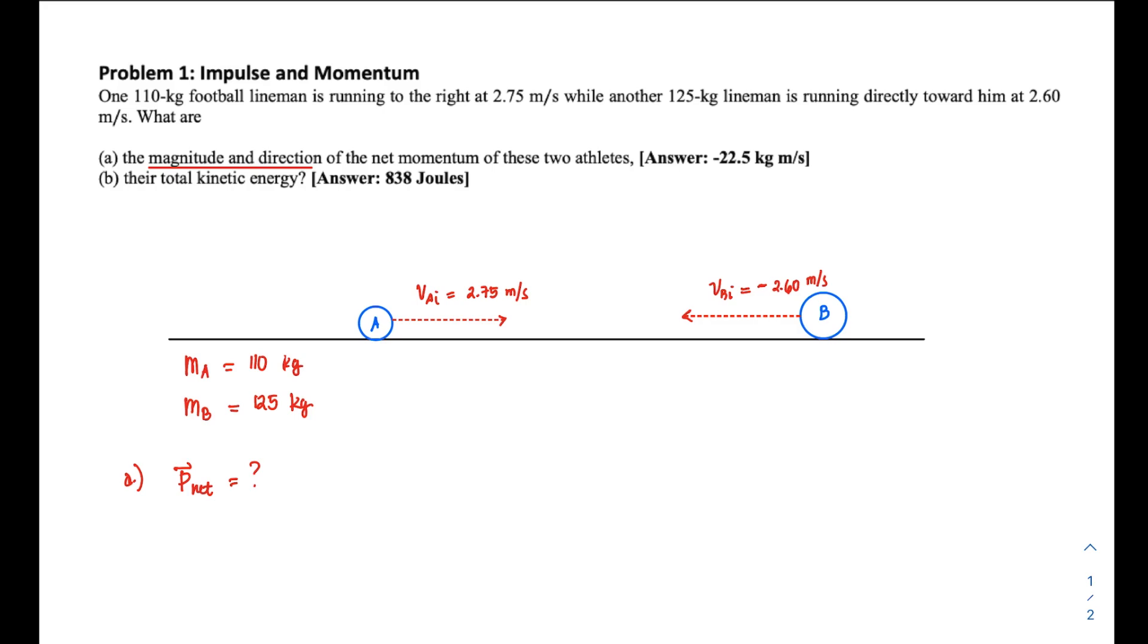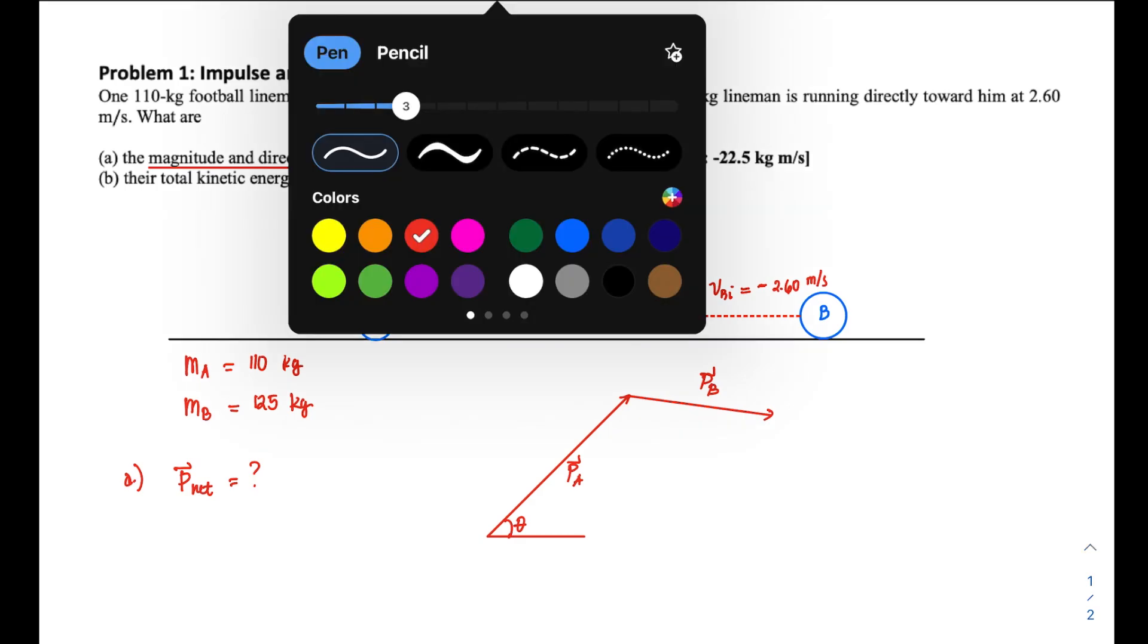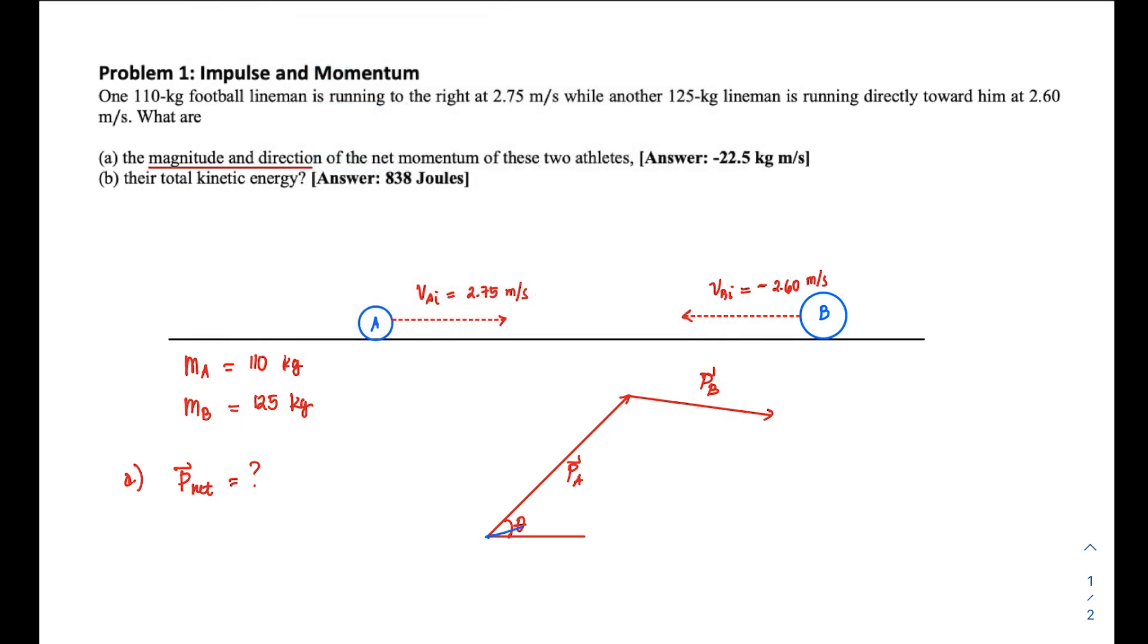direction—maybe you have some angle θ—and it interacts with momentum of another object, P_B. From our discussion, you know we solve that using vector addition to get P_total or net momentum. However, in this problem, that's not very practical because we're just dealing with linear motion along the x-axis, so this